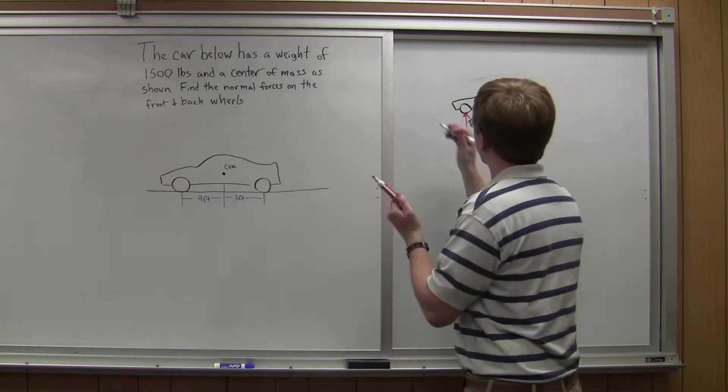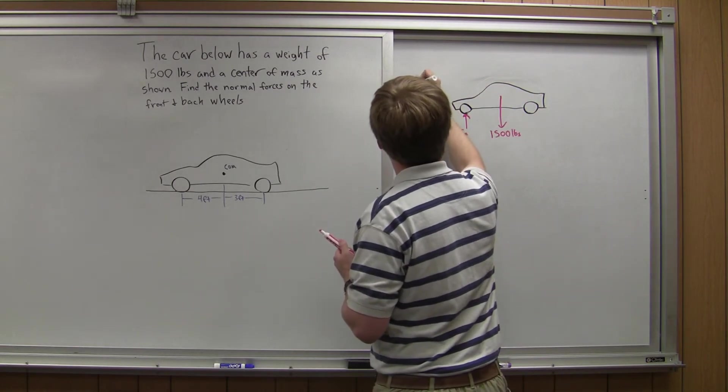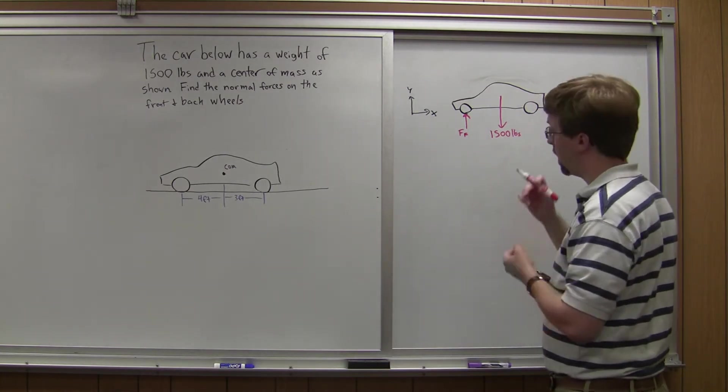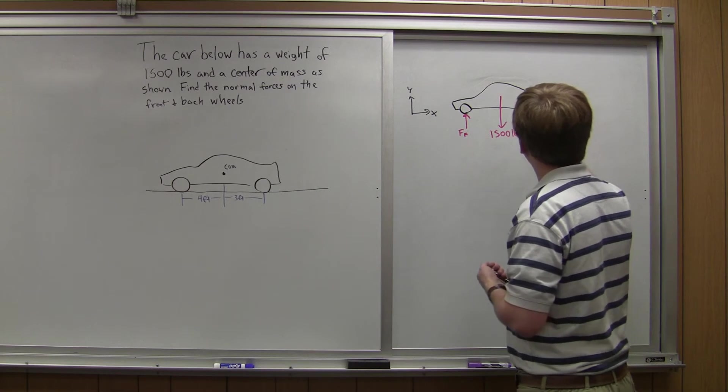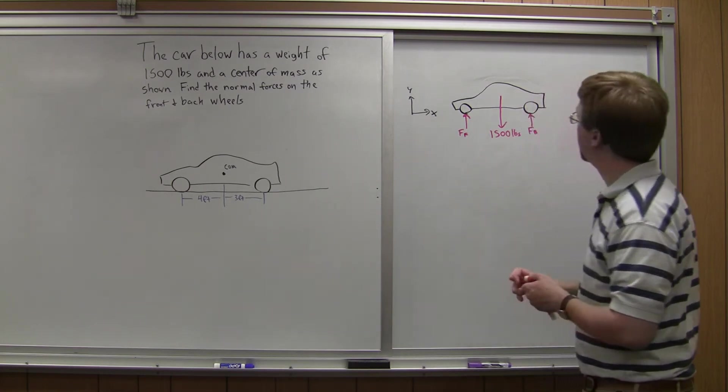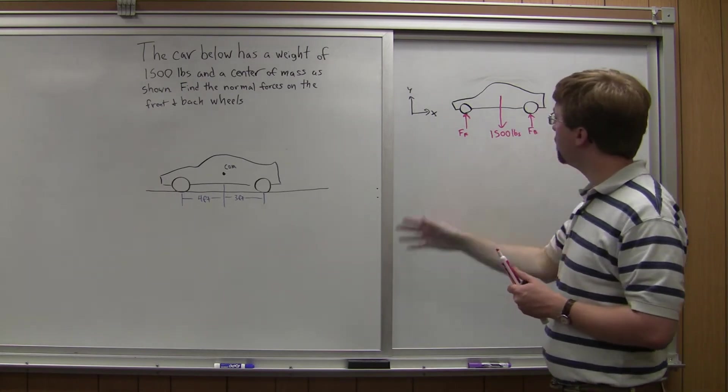It's going to be going straight up. In this case I'll draw in my axes, x and y. X is going to be horizontal, y is going to be vertical. So I've got Ff and at the back wheels I've got Fb for back. So now I've got my free body diagram.